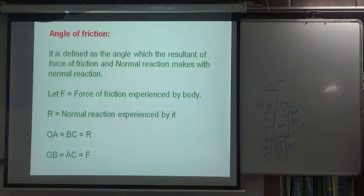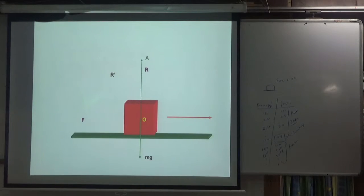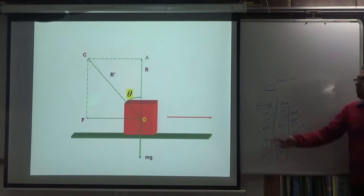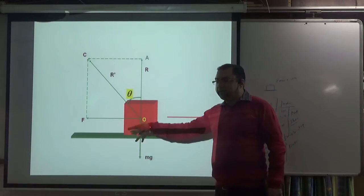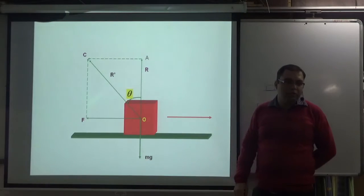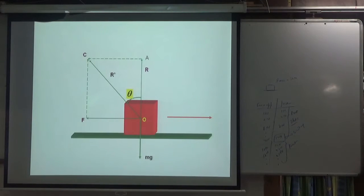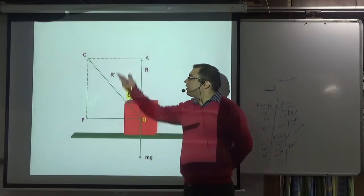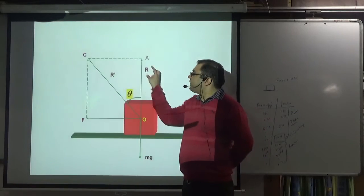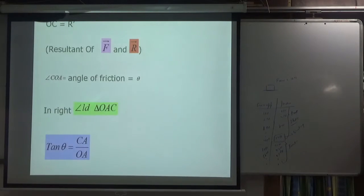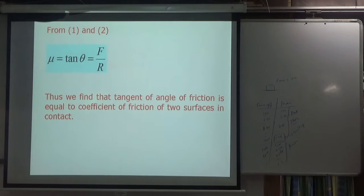The angle of friction: if a body is on a surface, the force of friction acts backward and the normal reaction acts upward. By the parallelogram law of vector addition, their resultant makes an angle θ with the normal reaction, called the angle of friction. From this, tan θ = F/R, and since F/R = μ, we get μ = tan θ, where θ is the angle of friction.